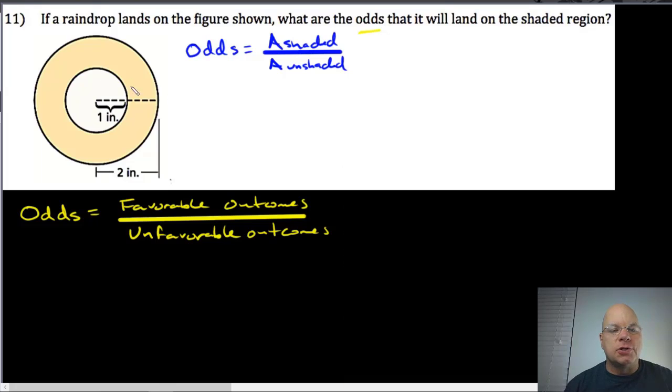It's easier to find the area of the unshaded region because that's just this small circle. The area of the unshaded region, which is a circle, is just π. I'll say rs for r for the small circle. The radius of the small circle is squared.